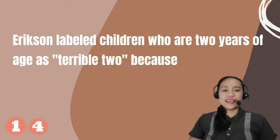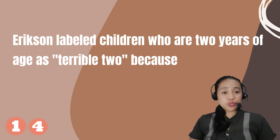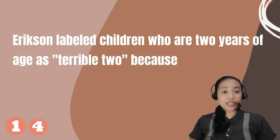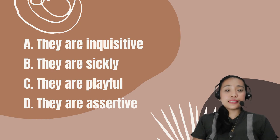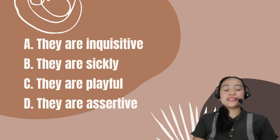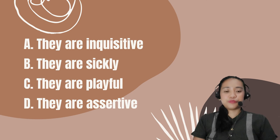Number 14. Erikson labeled children who are 2 years of age as 'terrible twos' because: A. They are inquisitive. B. They are sickly. C. They are playful. D. They are assertive.